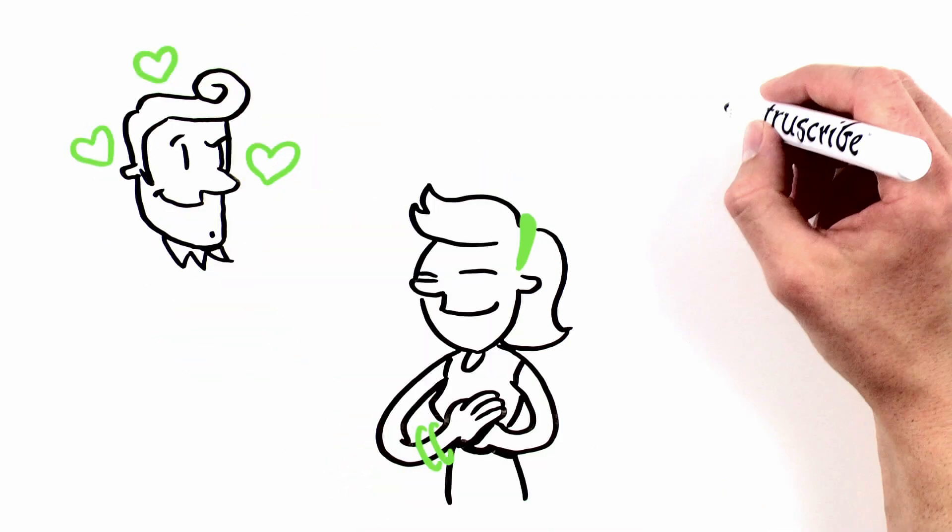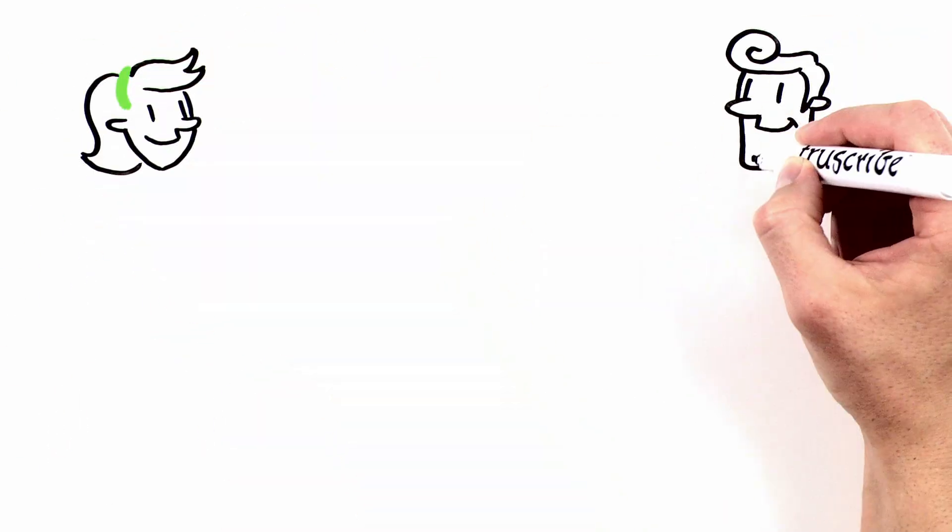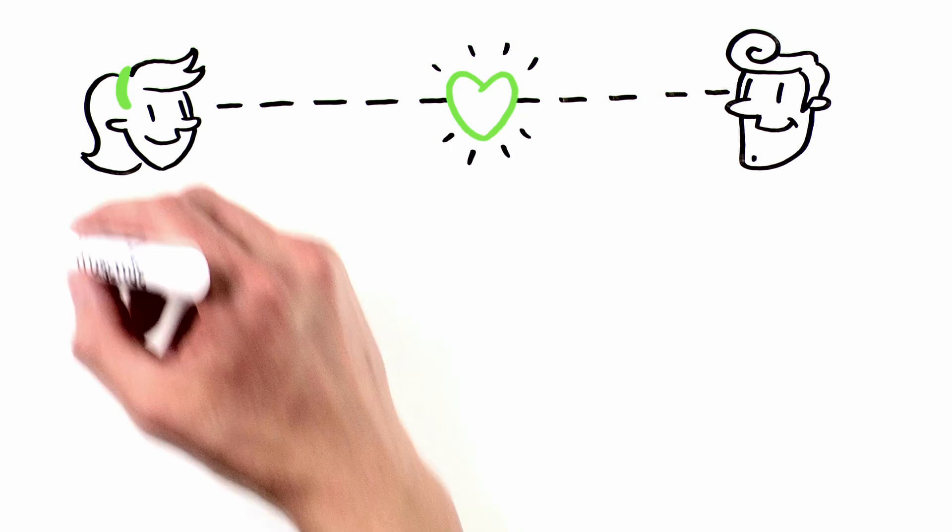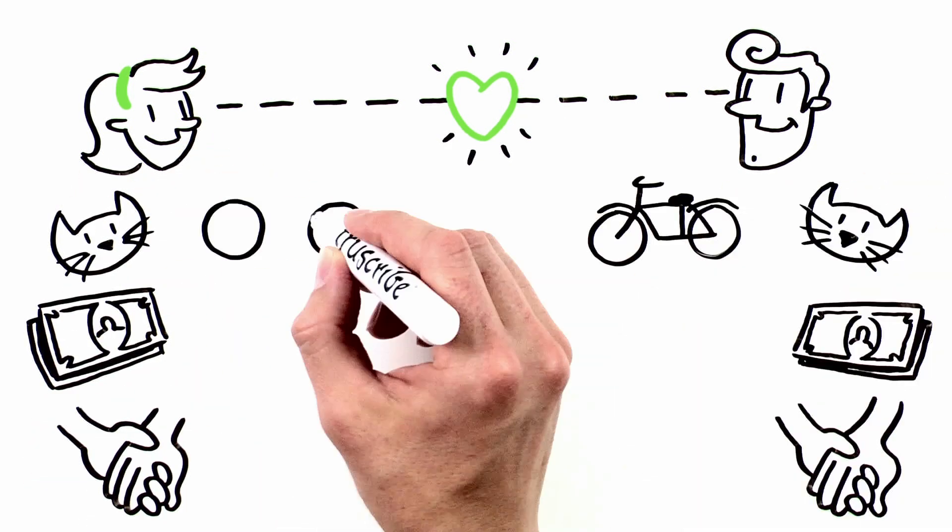Why do we find certain people more attractive than others? It will come as no surprise that we tend to be attracted to people who are like us in terms of personality traits, socioeconomic status, values, interests, and backgrounds.